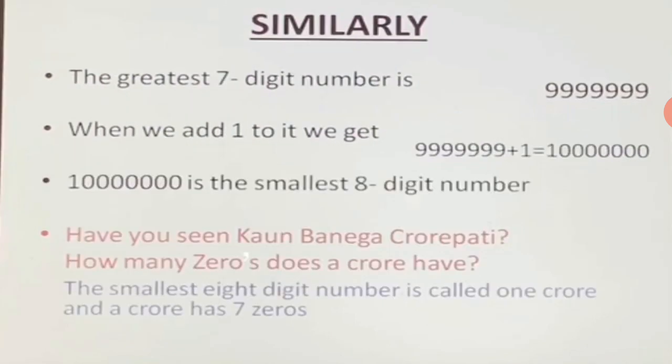Similarly, the greatest 7-digit number is 99,99,999 — seven 9s. When we add 1 to it, we get 1,00,00,000, which is the smallest 8-digit number. This smallest 8-digit number is called 1 crore, and a crore has 7 zeros.